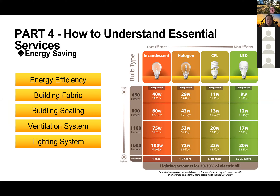Part J of the building code is about energy efficiency, assessed from different perspectives: building fabric, building sealing, ventilation systems, and lighting systems — all working together to ensure the building consumes less energy. For simpler projects, the calculations may be done by the designer or architect; for complex situations, they are done by sub-consultants.